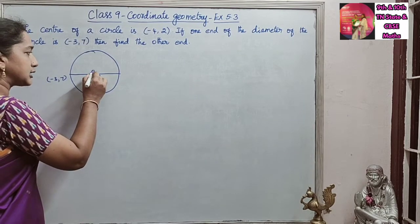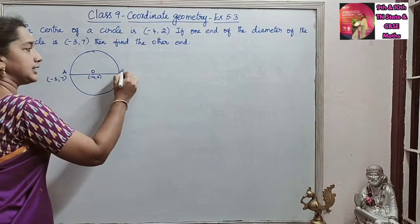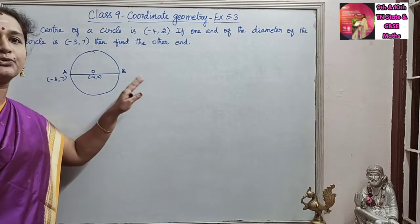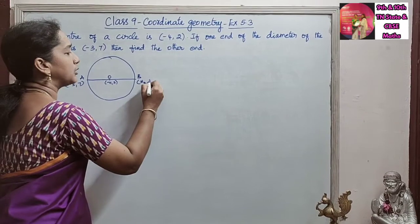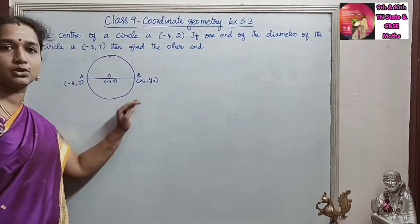So we take the centre point as O, the diameter as AB. We are asked to find the other point of the diameter, that is X2,Y2. That we are asked to find.